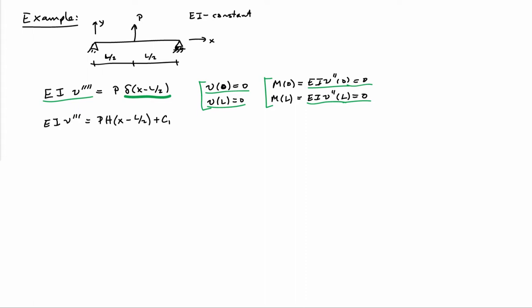So to proceed, we can first integrate our equilibrium equation once. So the delta function integrates to the step function plus a constant. We can integrate it a second time, and the step function integrates to a Macaulay bracket. We integrate the constant, we get an x, and we pick up a second constant of integration.